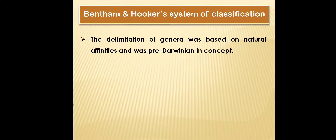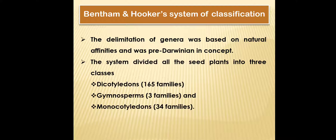The delimitation of genera was based on natural affinities and was pre-Darwinian in concept. The system divided all seed plants into three classes: Dicotyledons, which consists of 165 families; Gymnosperms, consisting of three families; and Monocotyledons, consisting of 34 families.